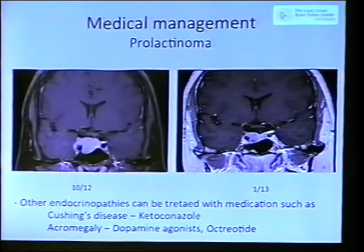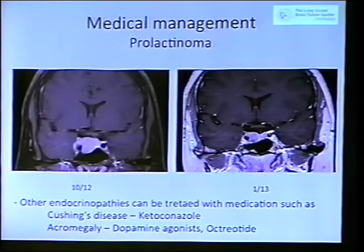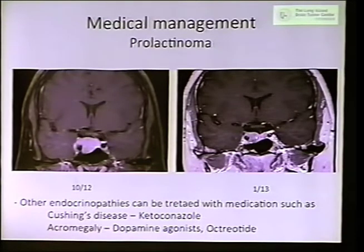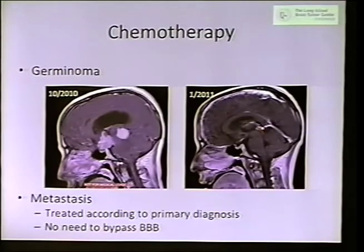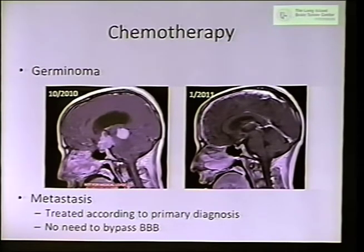Here's an example of a prolactinoma treated with bromocriptine. Within three months it's already much better — you can see how close it was to the optic chiasm, and now it's miles away. This will continue to get better. For the germinoma I showed before, with just three months of chemotherapy it's already gone — we don't see it anymore. This is a very responsive tumor to chemotherapy and radiation that just melts away — we don't need any surgery.